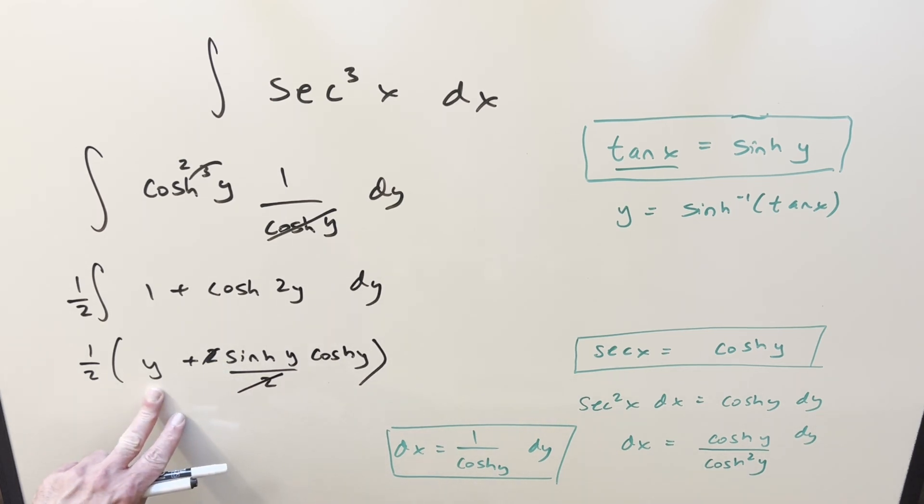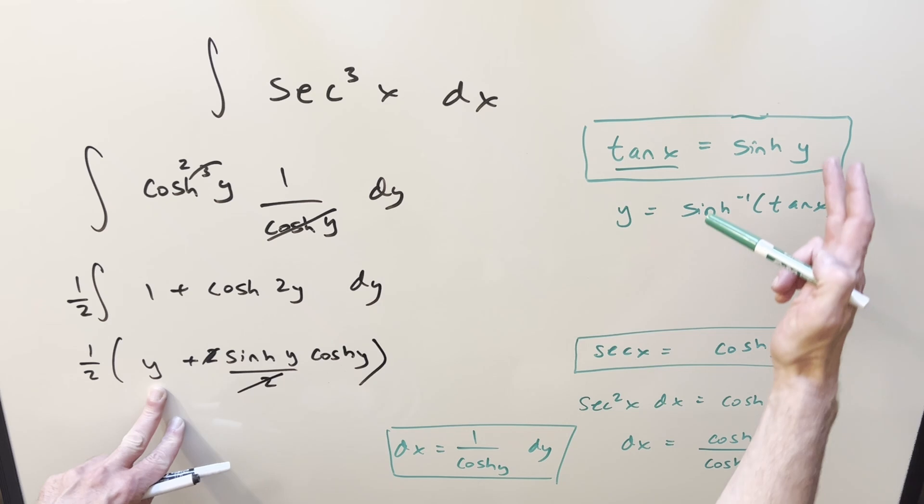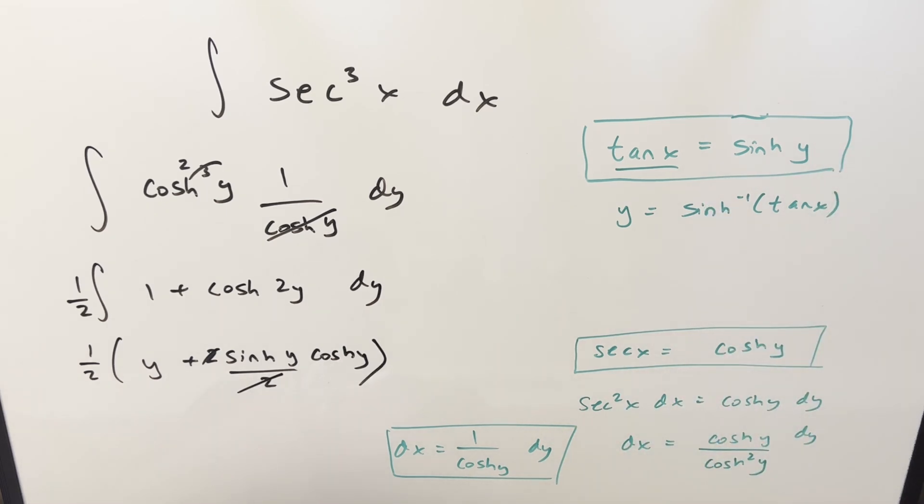And then now to back substitute, I think I have everything we need. We've got y, we have sinh y, and we have cosh y. So let me see if I can go up here with my solution. We're going to have one half in front. Then for our y value, we have this inverse sinh tan x plus sinh y cosh y, which is going to be tan x plus secant x.